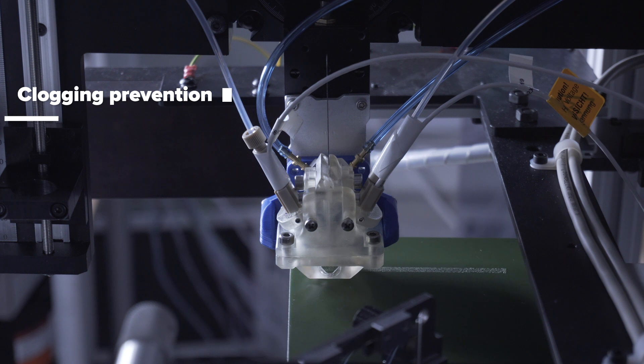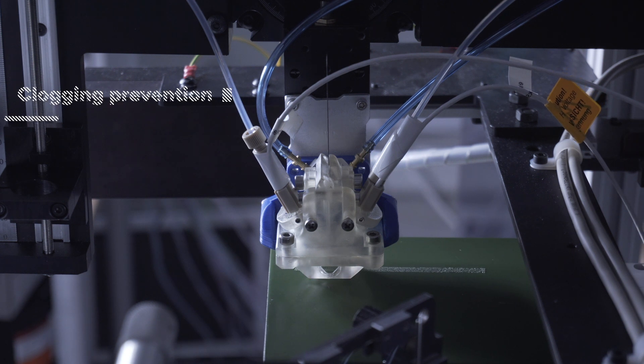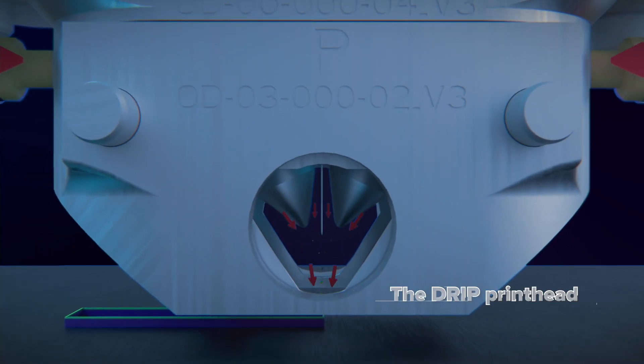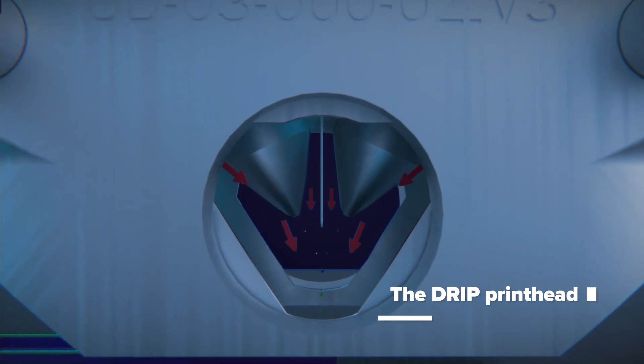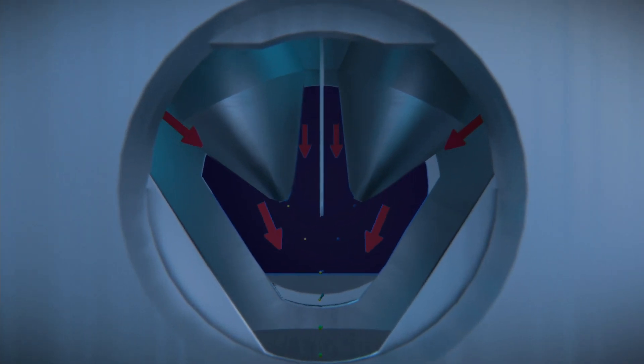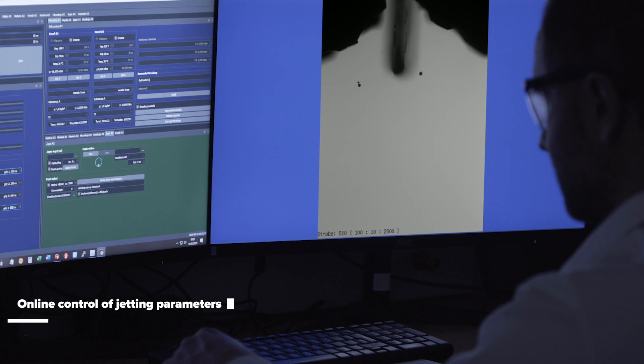The separator and the inert gas atmosphere prevent dispenser clogging and this guarantees stable operation of the printhead. Simultaneously, the integrated controller measures the droplet and recalculates jetting parameters.